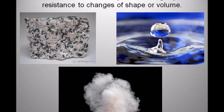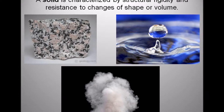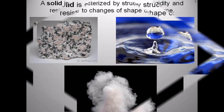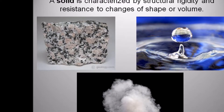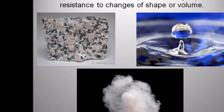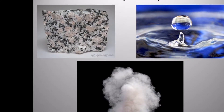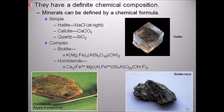A mineral is a solid that has structural rigidity and resistance to changes of shape or volume. A solid object does not flow or take on the shape of its container, nor does it expand to fill the entire volume available to it like a gas does. A mineral has definable chemical composition, meaning that a chemical formula of the elements for that specific mineral can be written. Some minerals, like diamond and graphite, have only one element, carbon, in their formula.